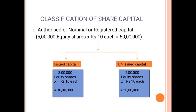Within authorized capital, there are two parts: issued capital and unissued capital. Issued capital means the amount the company wants to issue to the public. The company never collects all the money at once. Suppose ABC Company requires only 30 or 40 lakh rupees at the primary stage, so they issue accordingly. Only that part of authorized capital which is issued is called issued capital. What is not issued is called unissued capital.